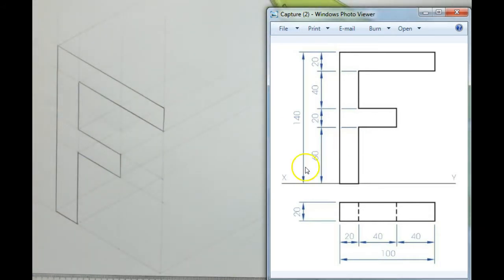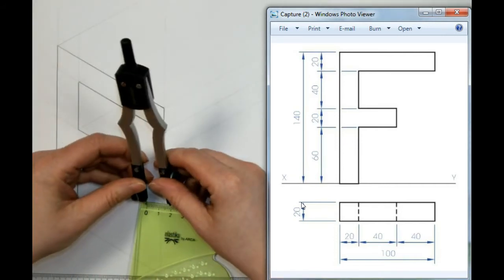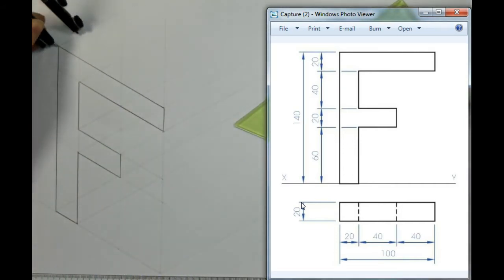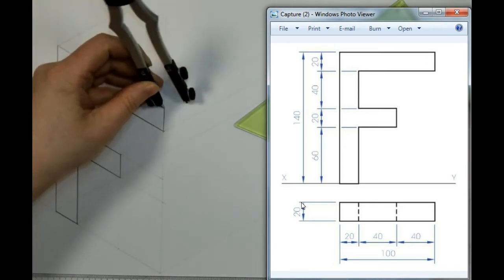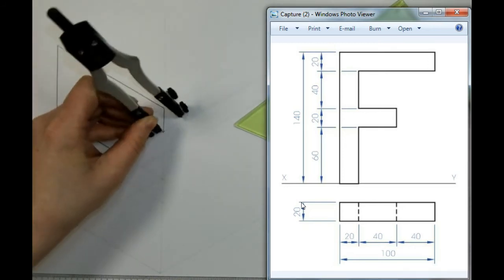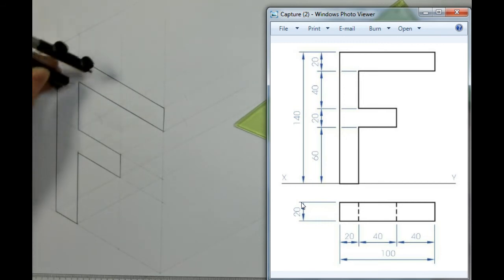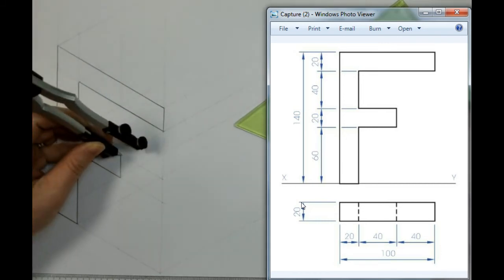As we can see from our plan, our thickness is 20 millimeters. Using my set square and compass, I'm going to put 20 millimeters onto it. Nice small arcs to show my thickness. We don't draw these arcs in dark because it will take away from the presentation.